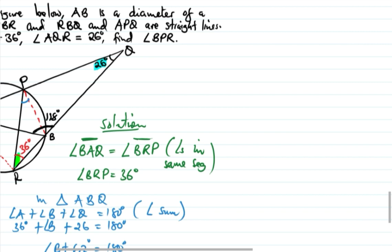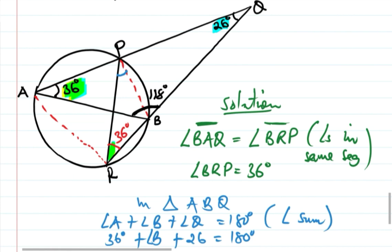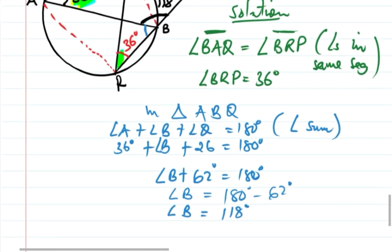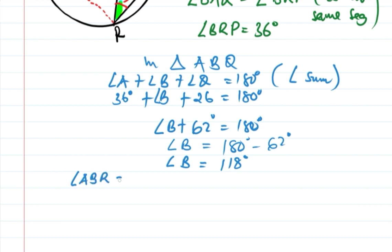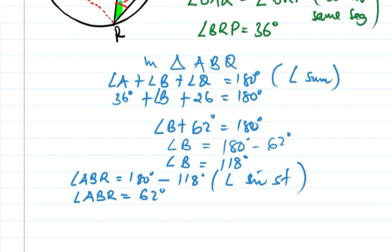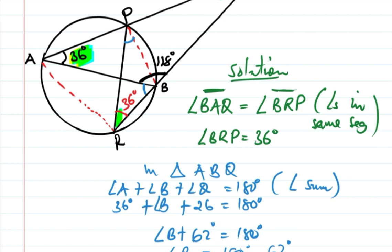Now, ABQ is a straight line, so angles on a straight line sum to 180 degrees. Therefore angle ABR equals 180 degrees minus 118 degrees, which equals 62 degrees — angles in a straight line.